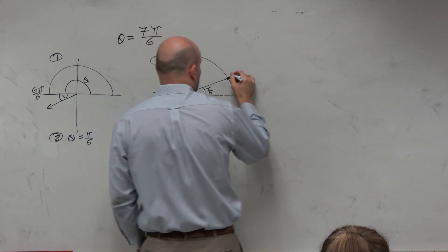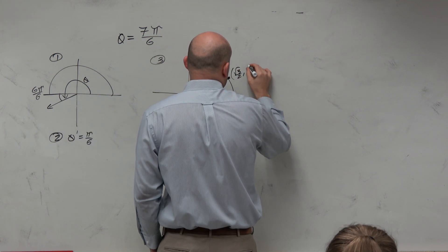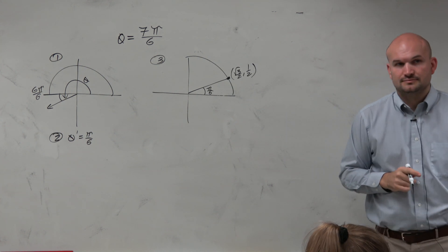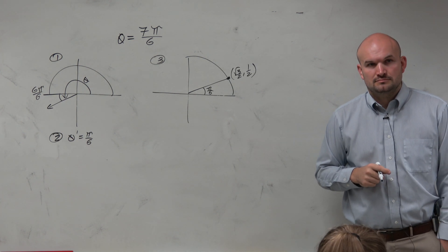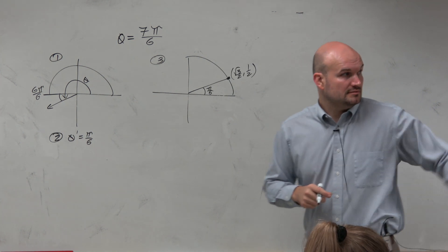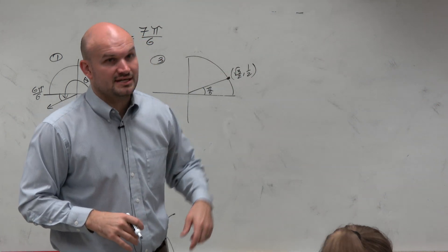has a coordinate point of square root of 3 over 2, comma, 1 half. It's listed right there for pi over 6.